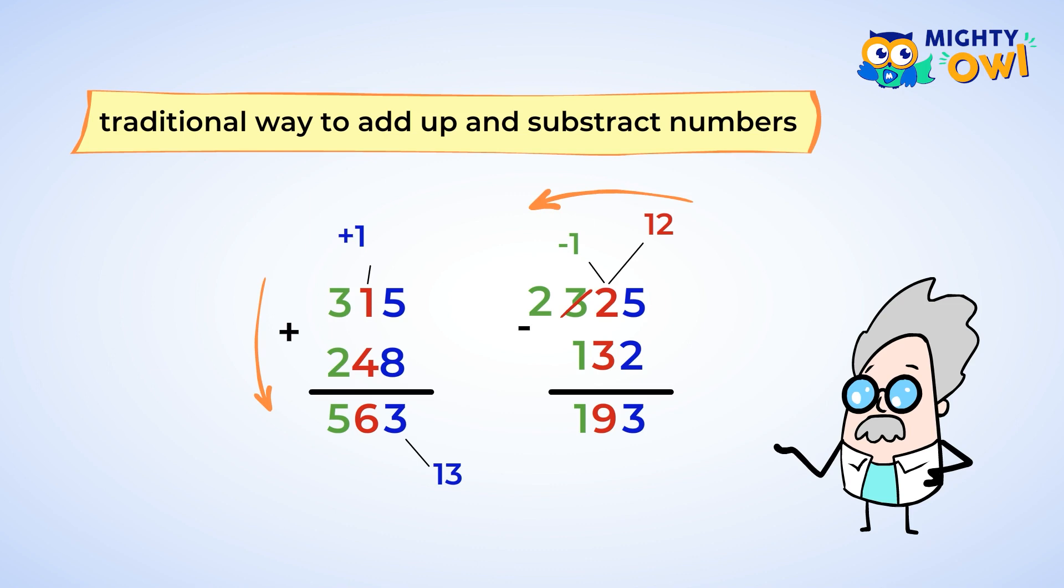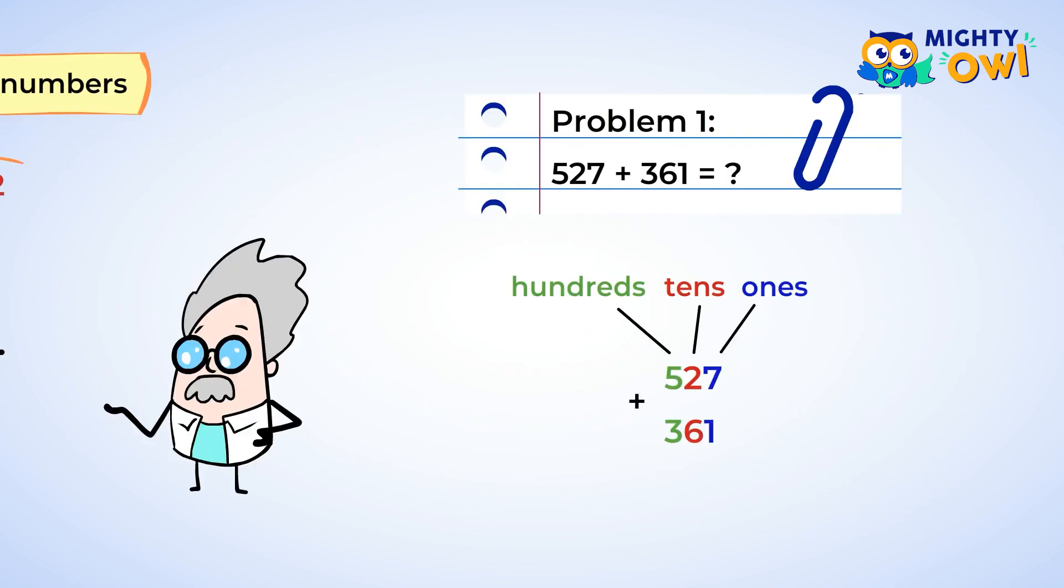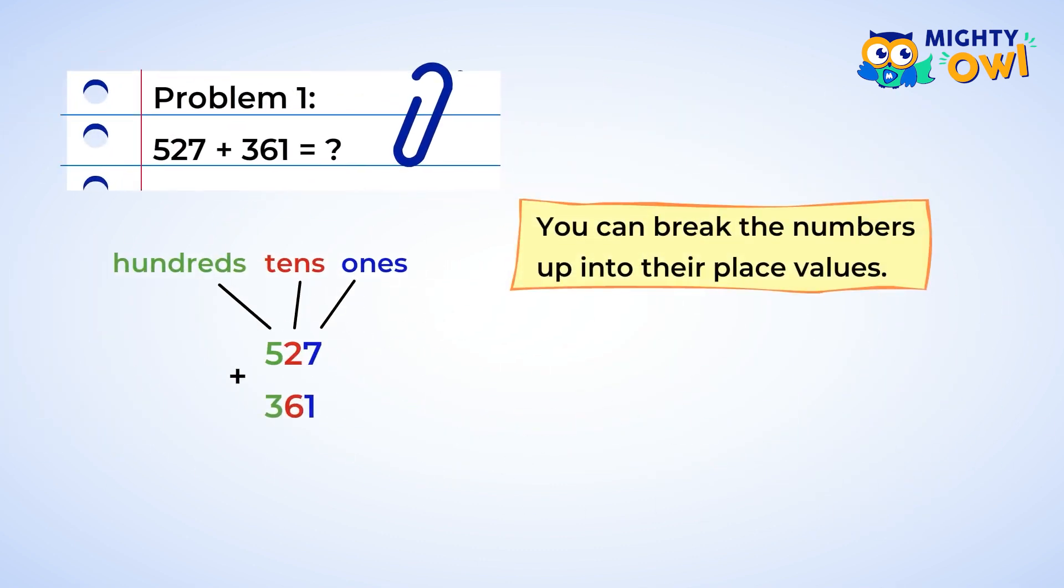But I want to show you some different ways that you can look at numbers in addition or subtraction. The first way is to break the numbers up into their place values. Let's take a look at an example.